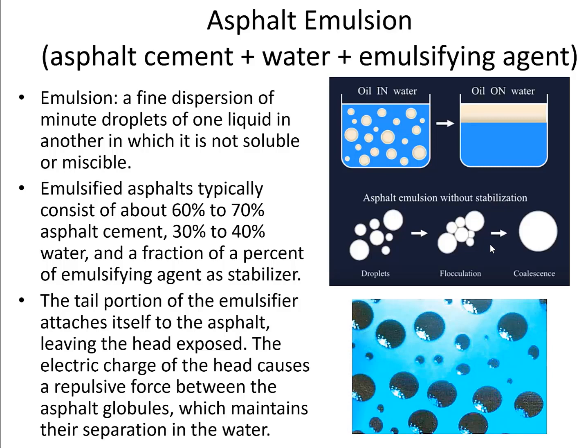The tail portion of the emulsifier attaches itself to the asphalt droplets, leaving the head portion exposed. The electric charge on the head portion causes a repulsive force between the asphalt droplets, which maintains their separation in the water. That's how the asphalt emulsion forms. Although asphalt emulsions and asphalt cutbacks are used for the same applications, such as pavement preservation or cold mix, the use of emulsions is increasing because they do not include hazardous materials or costly solvents.